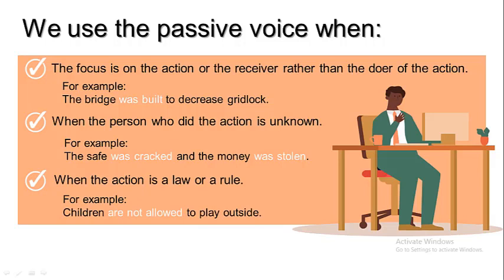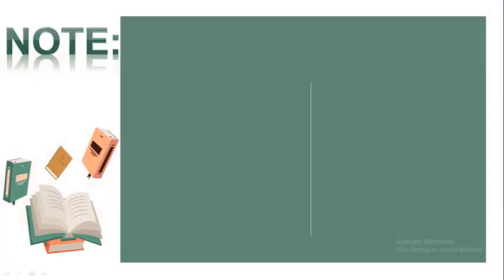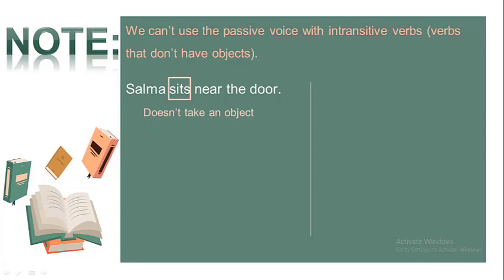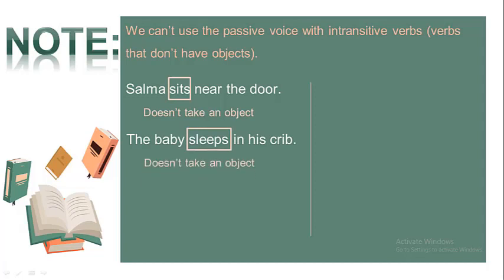The third case is when the action is a law or a rule. For example: children are not allowed to play outside. What is important here is the rule that children are not allowed. Now, there is a certain note that you have to pay attention to: we cannot use the passive voice with intransitive verbs — verbs that don't have an object. For example: Salma sits near the door. Salma is the subject, sits is the verb. However, the verb sits doesn't take an object — it has no receiver. So we can't use the passive voice in this sentence. Similarly: the baby sleeps in his crib. The baby is the subject, sleeps is the main verb that doesn't take an object. There is no receiver of the action. These verbs are called intransitive verbs as the action doesn't have a receiver.